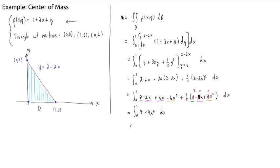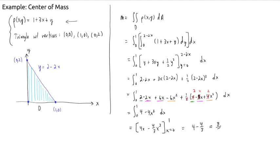So we're left with the integral from 0 to 1 of (4 minus 4x squared) dx. The antiderivative is 4x minus four-thirds x cubed, evaluated from 0 to 1. This gives 4 minus four-thirds minus 0, which is 12/3 minus 4/3, equals 8 thirds. So the mass of the region is 8/3.